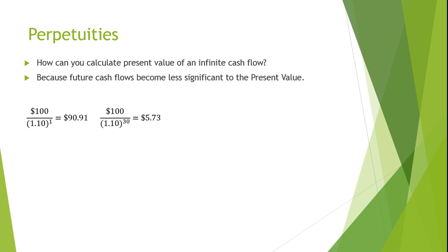To take this a step further, a $100 cash flow received 50 years from today would only have a present value of about $0.85. And finally, a $100 cash flow received 100 years in the future discounted at the same 10% interest rate would only have a present value of less than a single penny at about $0.007. Therefore, even though there is an infinite number of cash flows, they eventually become so insignificant that they hardly have an impact on the present value of the perpetuity as a whole.